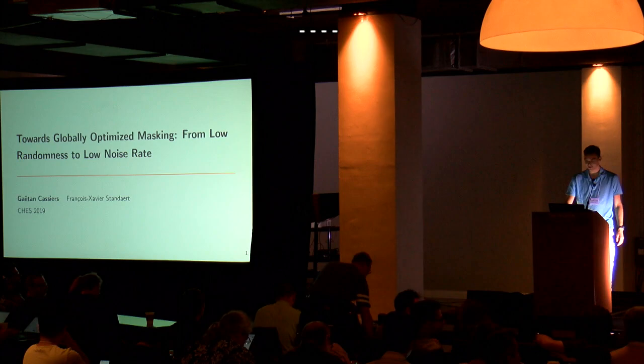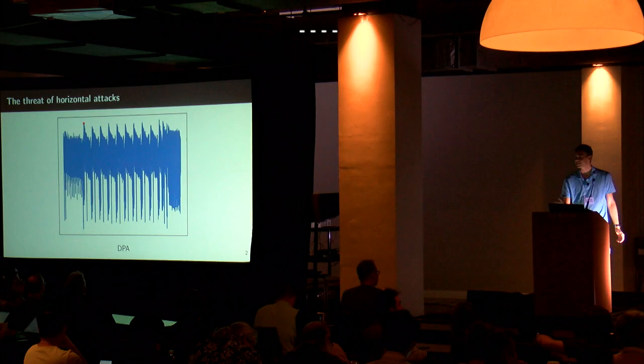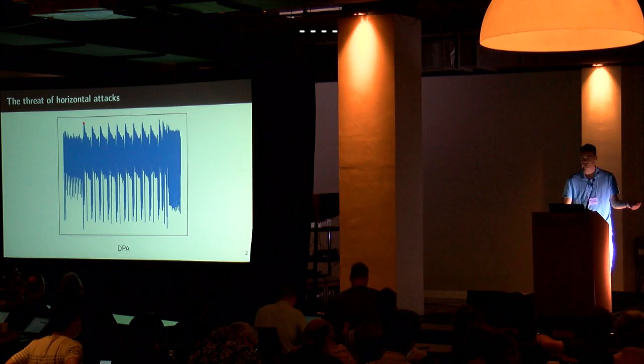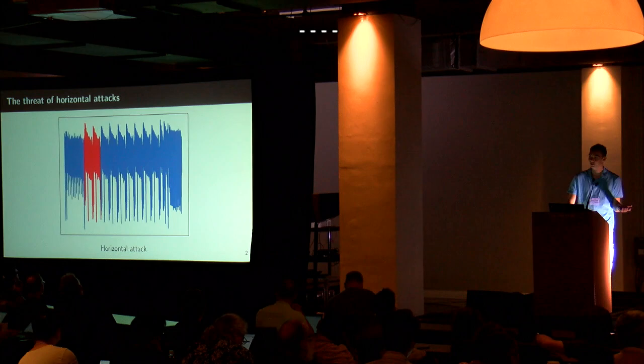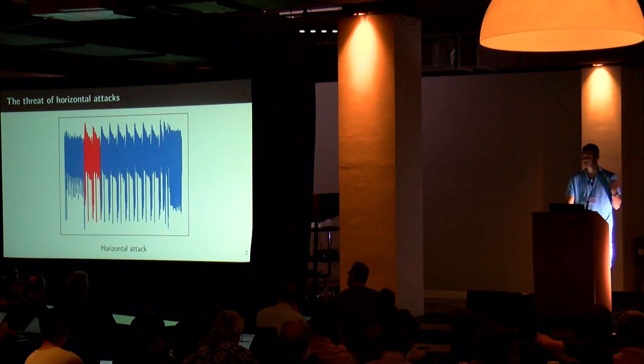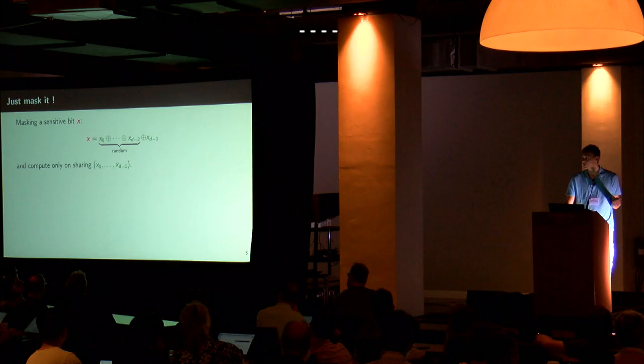This is about side-channel attacks. In standard SPA, you take one point of interest and try to attack it, then recover the key. The idea of horizontal attacks is to take more samples from the leakage trace to get more information, needing fewer leakage traces to recover the key. There are many ways to do this.